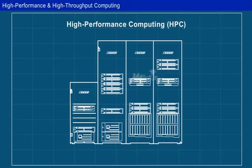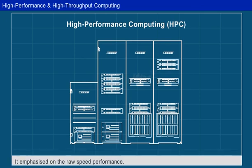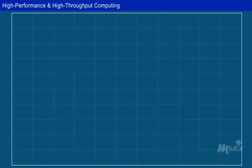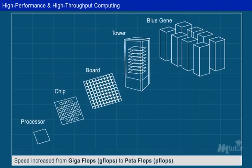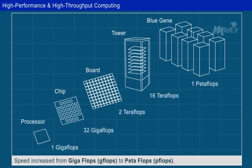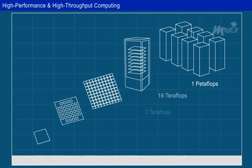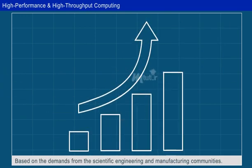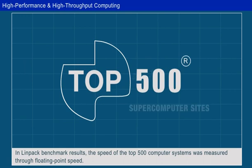High-performance computing, or HPC, systems emphasized raw speed performance for many years. The speed of HPC systems increased from GFLOPs, that is, GIGAFLOPs, to PFLOPs, that is, PETAFLOPs, from the 1990s to 2010. This improvement was driven mainly by demands from the scientific, engineering and manufacturing communities. In the Linpack benchmark results, the speed of the top 500 computer systems was measured through floating-point speed.